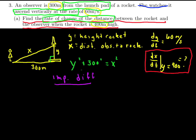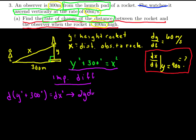We're going to take the expression y² + 300² = x² and use implicit differentiation to find a formula for dx/dt. Taking the differential of both sides: the differential of y² + 300² equals the differential of x². Applying our differential rules — that distributes across addition — we get 2y dy plus the differential of 300² which is 0, equaling 2x dx.